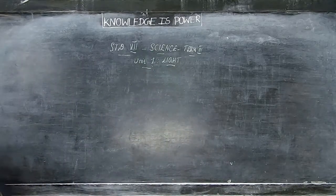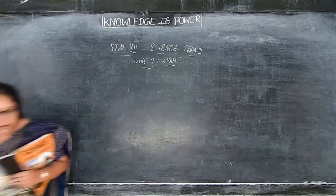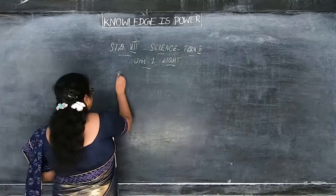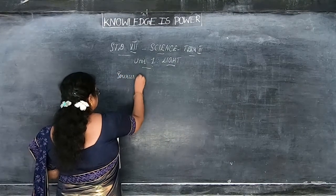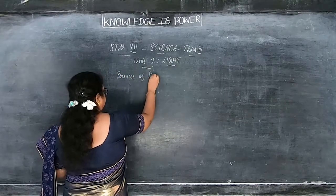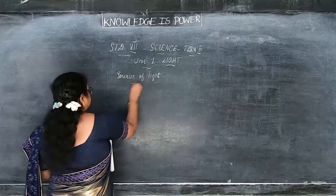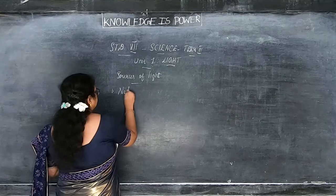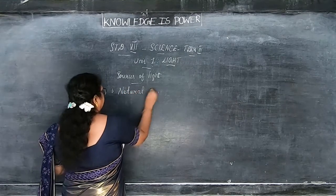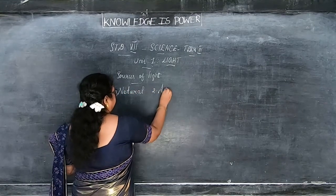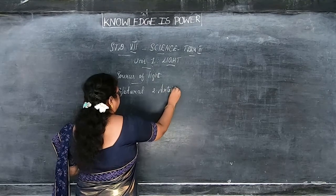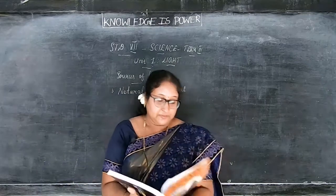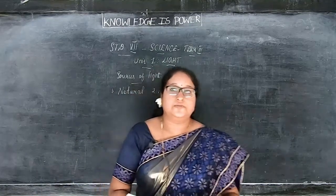First, sources of light. We are going to see about the sources of light. There are two types: first is natural source of light, and another one is artificial source of light. So there are two — natural and artificial source of light. First we are going to see natural source of light.